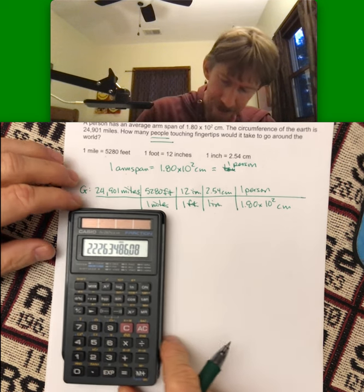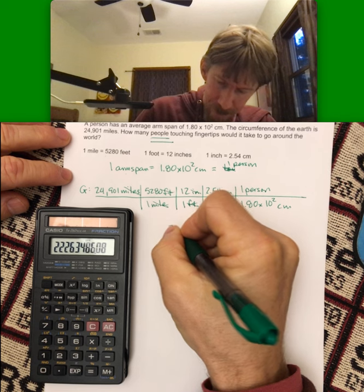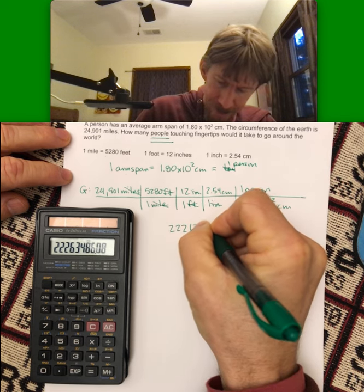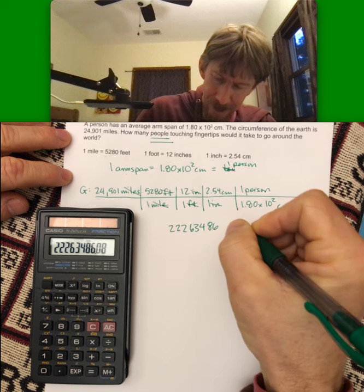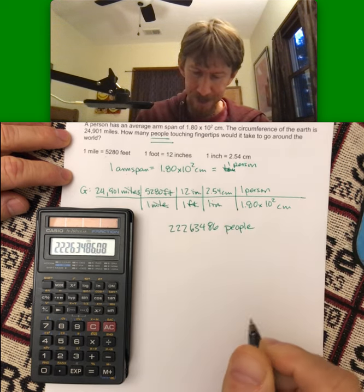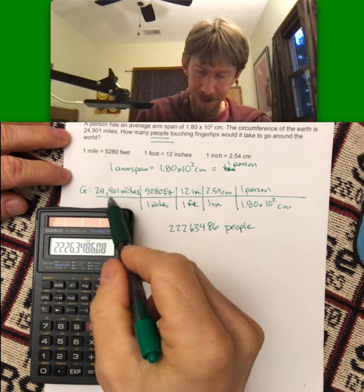I'm going to have to write this out and figure it out: 2226348... That should be plenty of sig figs. Does that make sense? Yeah, it's a lot of miles, it's a lot of feet.